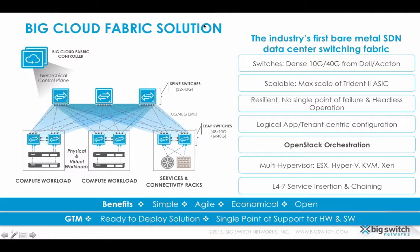Let's start with a quick overview of Big Cloud Fabric. BCF is the industry's first bare metal SDN data center fabric solution. It's a leaf-spine cloth fabric that provides physical and virtual workload connectivity within a data center pod. Virtual workloads supported span multiple hypervisors: ESX, Hyper-V, KVM, and Xen. The leaf and spine switches are 10 gig or 40 gig bright box or white box switches from vendors such as Dell and Accton, running Switch Light OS - a lightweight bare metal switch OS built for SDN.